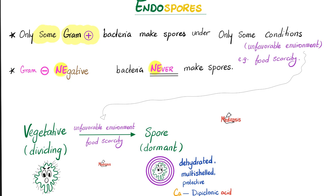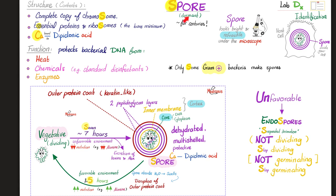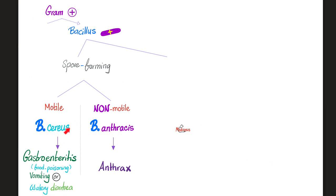Bacillus cereus can make an endospore, especially under unfavorable conditions. But if the unfavorable become favorable conditions, the bacteria will convert from spore back into the vegetative state and will divide like crazy. So if you eat that rice, you might have a problem. I have a separate video about the topic of spores, so please watch it or pause and review.